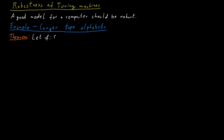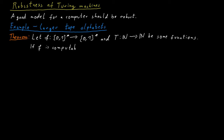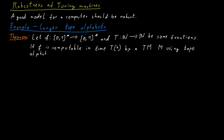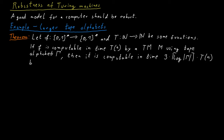Let F be some computational problem and let T be some function. Then if F is computable in time T(n) by a Turing machine M that uses a tape alphabet Γ, then it is computable in time 3 × ⌈log|Γ|⌉ × T(n) by a Turing machine M' using the alphabet {0, 1, blank}.